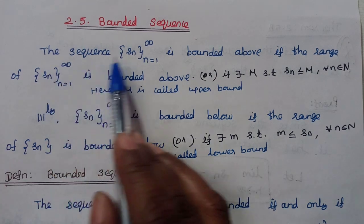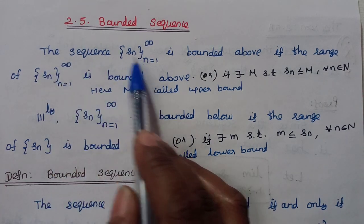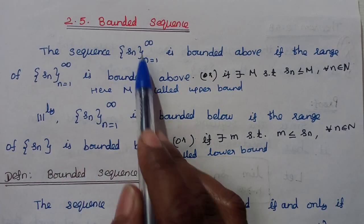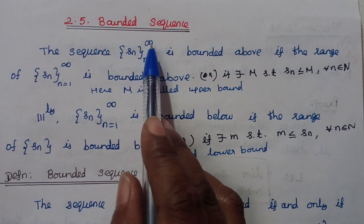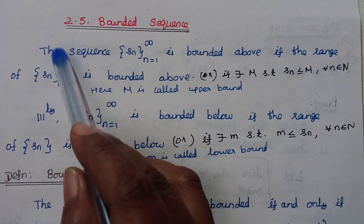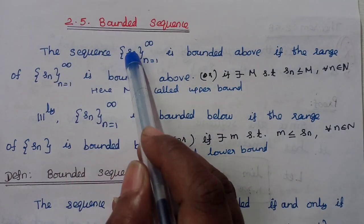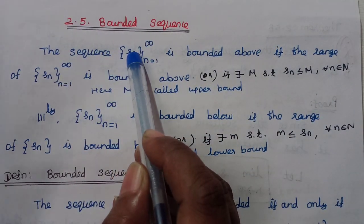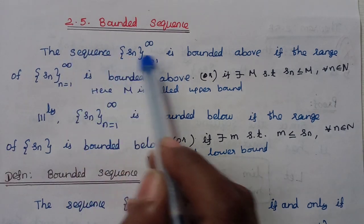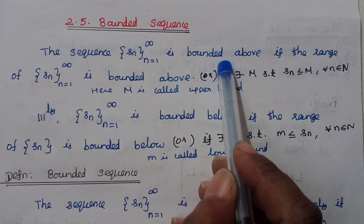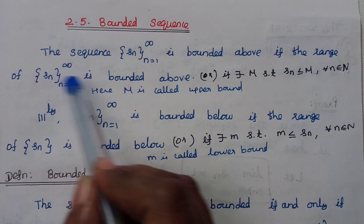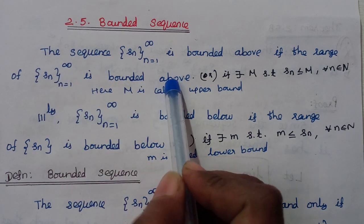The sequence {Sn} where n equals 1, 2, ... to infinity. The sequence is bounded above if the range of the sequence is bounded above.